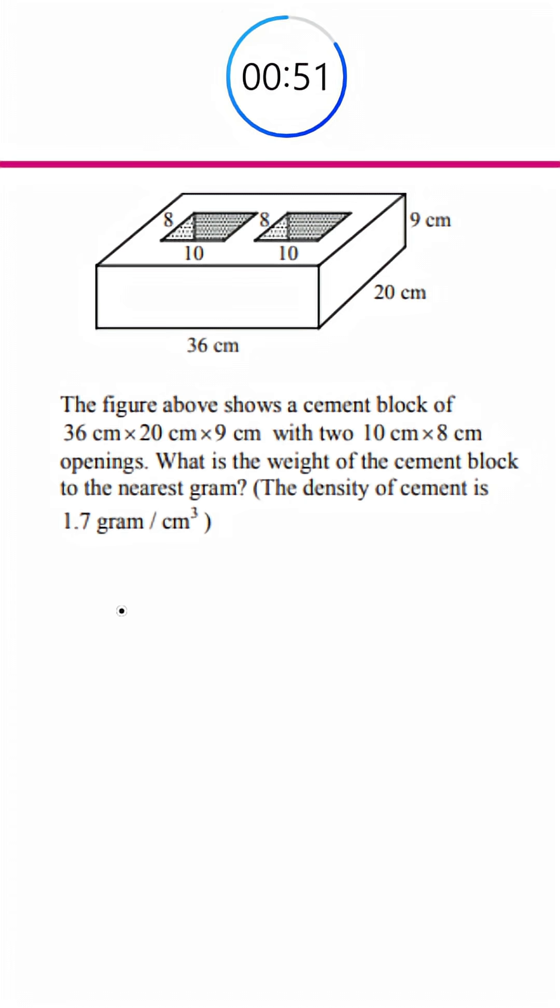So we have a whole cement block. If we didn't take anything out, we would have the total volume of 36 times 20 times 9.